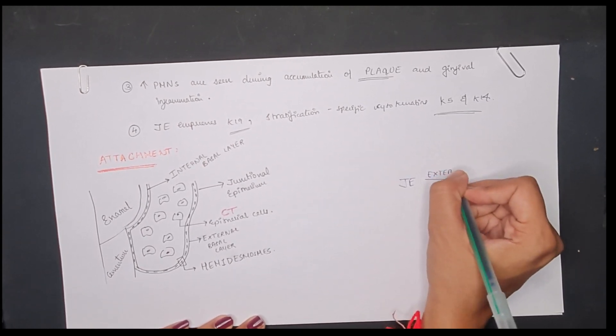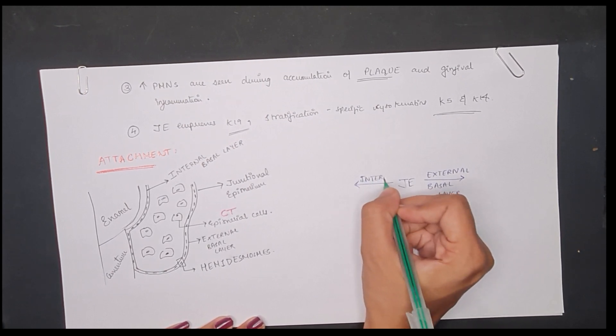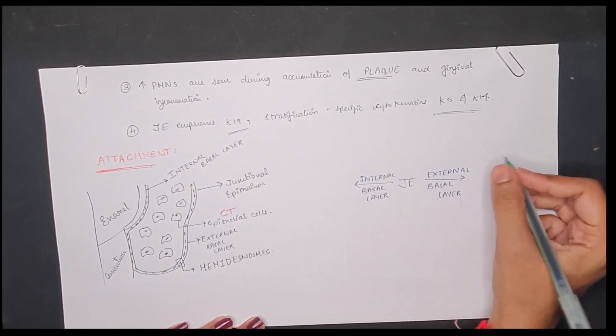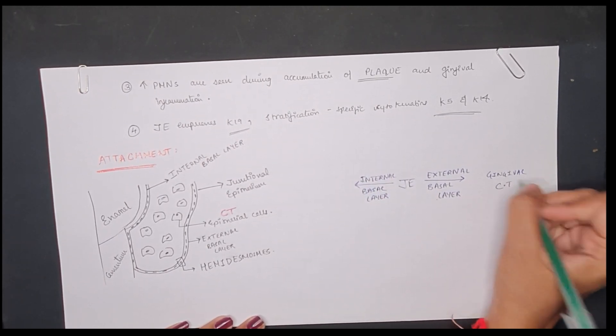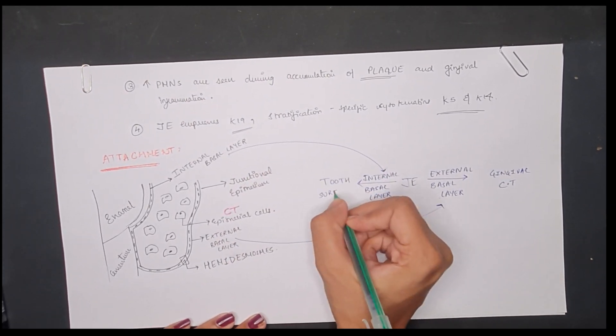Now, the junctional epithelium has on the right side the external basal lamina and on the left side the internal basal lamina. The internal basal lamina is towards the tooth surface and the external basal lamina is towards the gingival connective tissue.